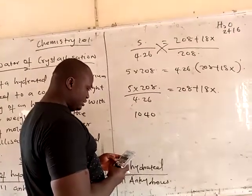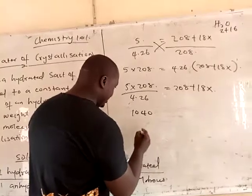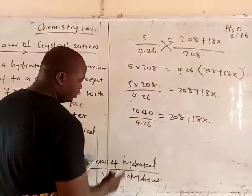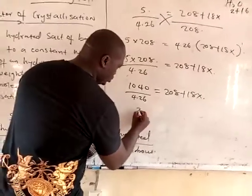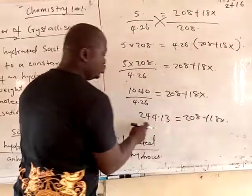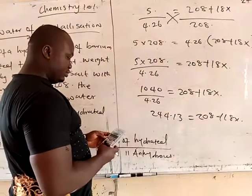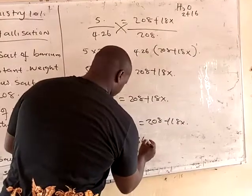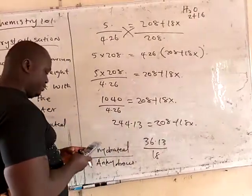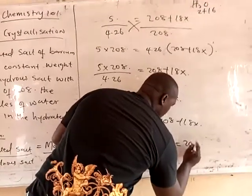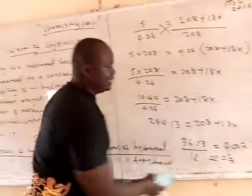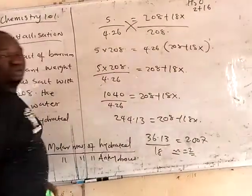Dividing by 4.26, you get 244.13 equal to 208 plus 18x. Moving 208 to the other side: 244.13 minus 208 gives 36.13. So 36.13 equals 18x. Dividing 36.13 by 18 gives approximately 2.007, which is approximately 2. So the number of molecules of water of crystallization is 2.